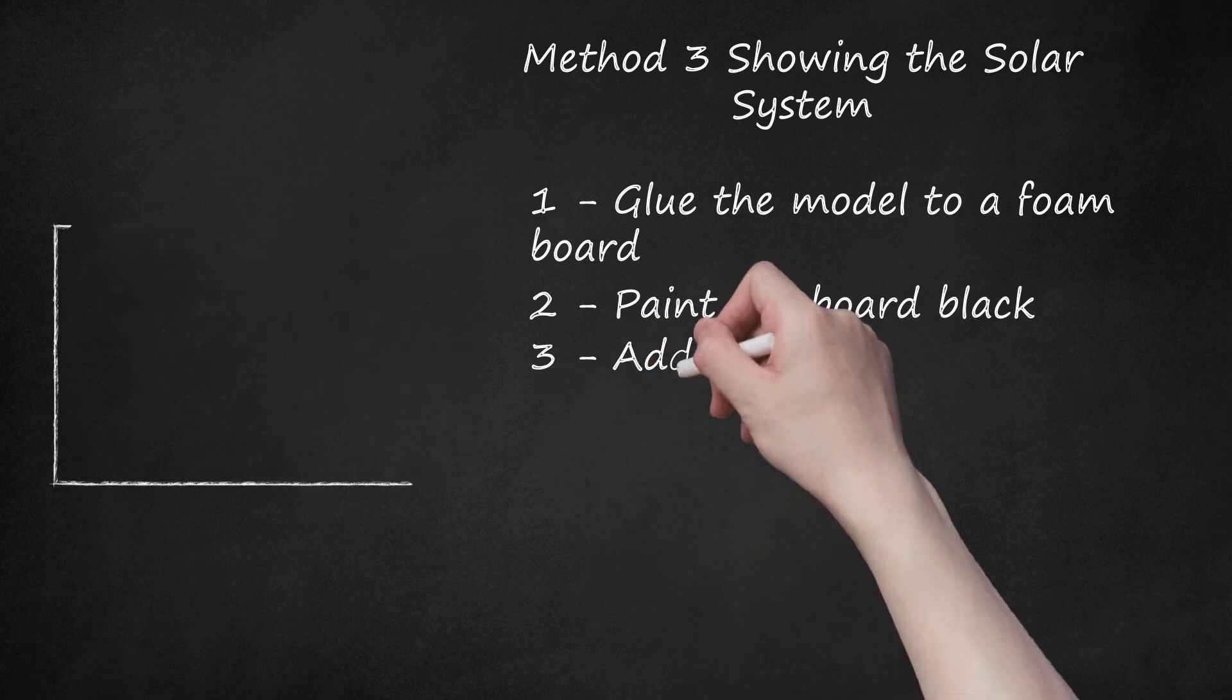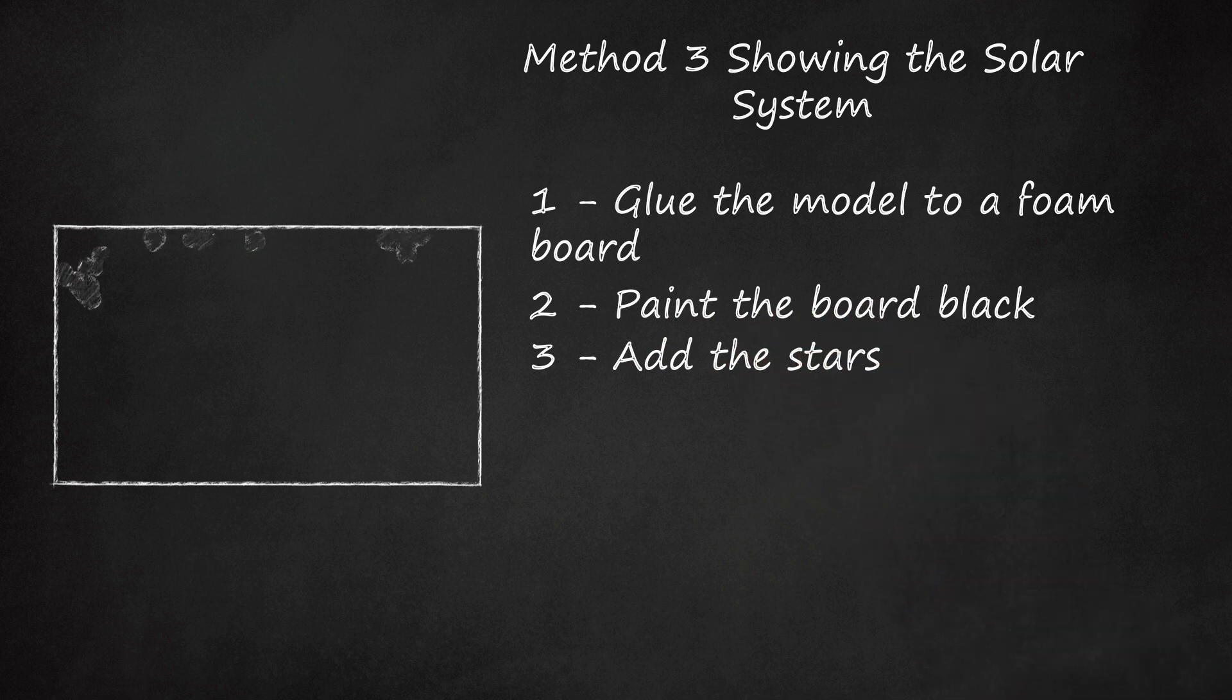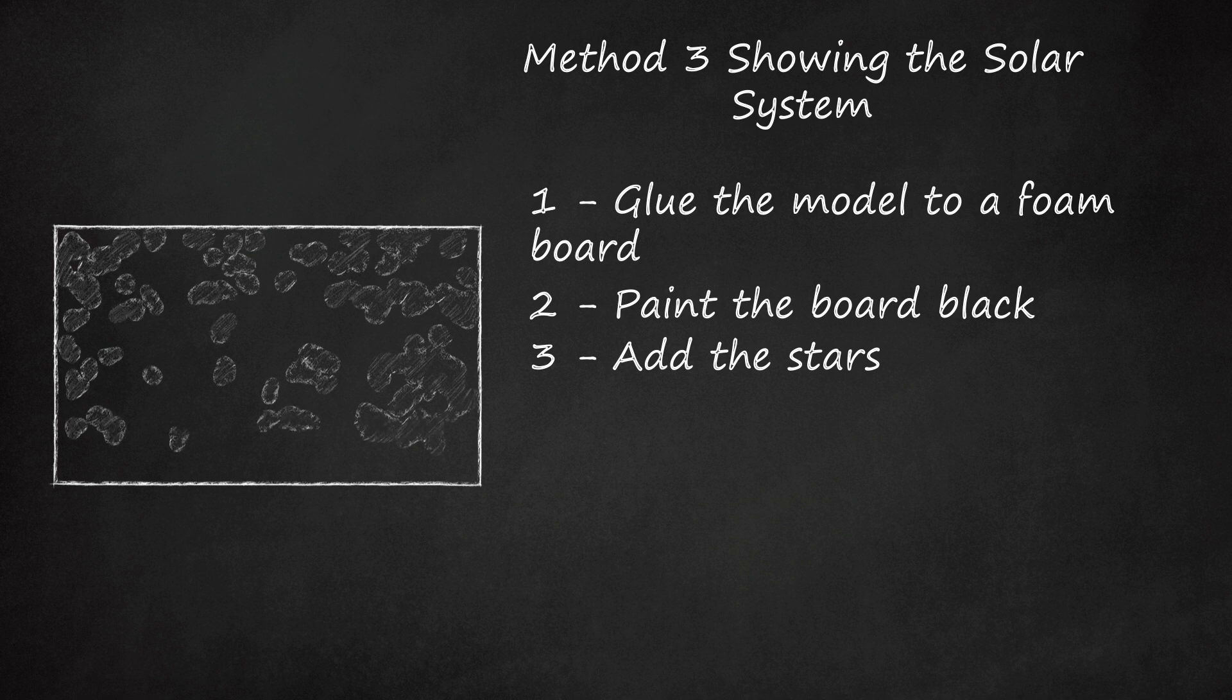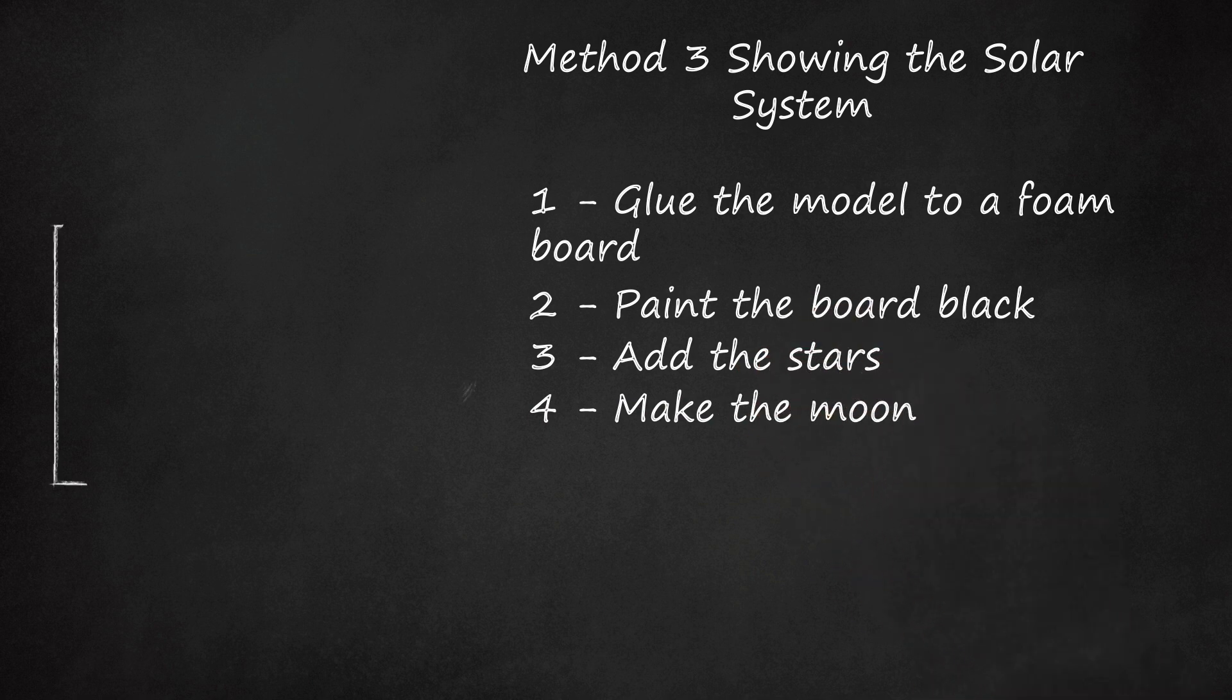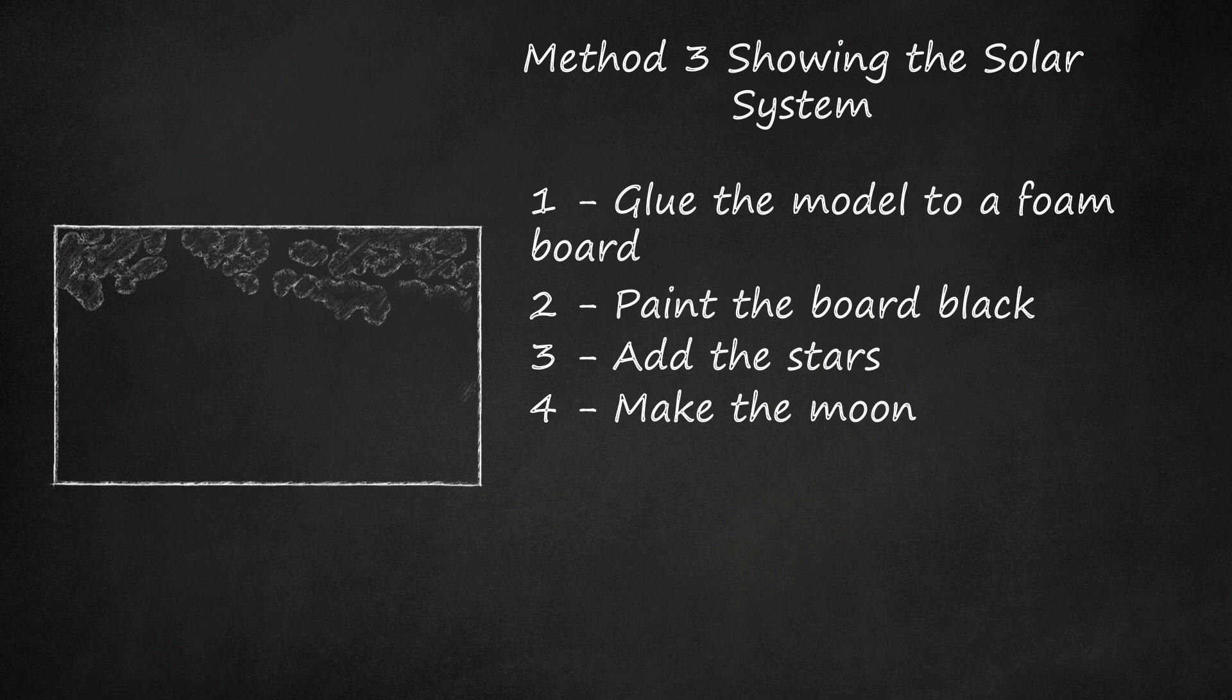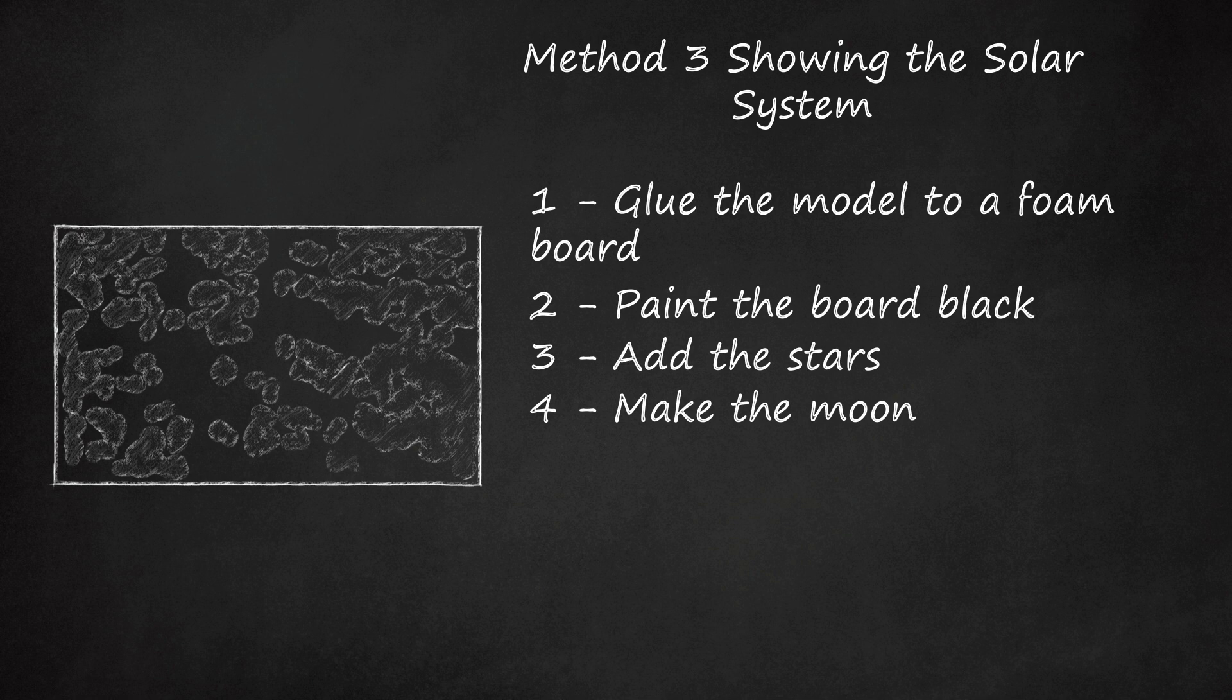Step 3: Add the Stars. You can use stick-on stars, or cover the background with glitter glue or glitter paint. Step 4: Make the Moon. Find a golf ball or a crumpled up piece of paper, about one quarter the size of your earth model. Glue it on the board, close to the earth.